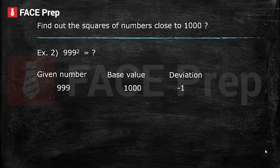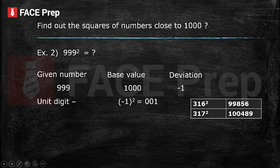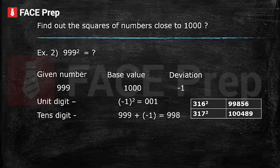Let's take one more example: find the square of 999. The base value is 1000 and the deviation is minus 1. The unit digit is the square of minus 1, which is 1 — but we write 001. Observe the table: if we calculate the square of any number greater than 316, the square has 6 digits; if less than 317, it has 5 digits. Since 999 is greater than 316, the square will have 6 digits. For the tens digit: 999 plus minus 1 gives us 998. The final answer is 998001. I hope you liked the video, thank you.